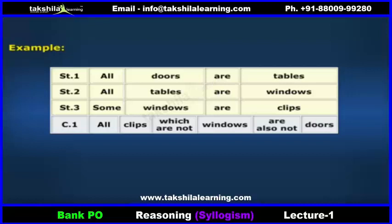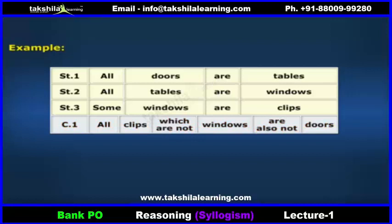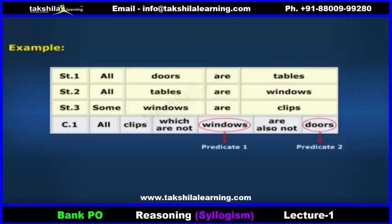It's a different type of conclusion. It includes three identifiers — clips, windows, doors. How will I conclude it? See Vidya, there are two predicates in this conclusion — that is, windows and doors. In such types, you have to follow the process.